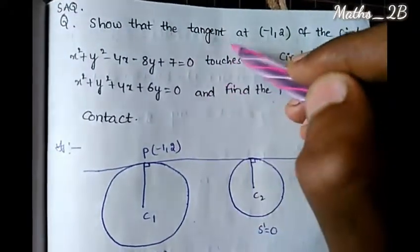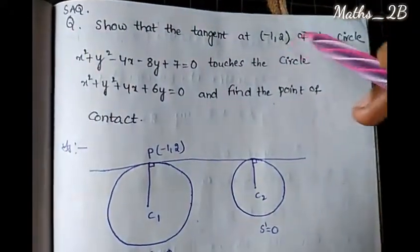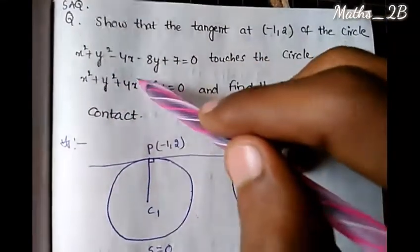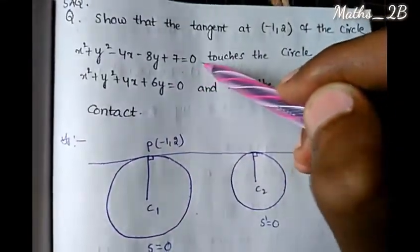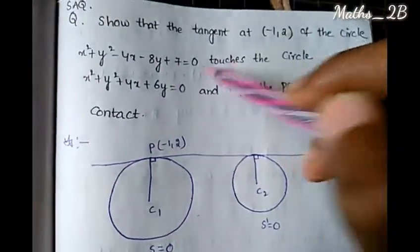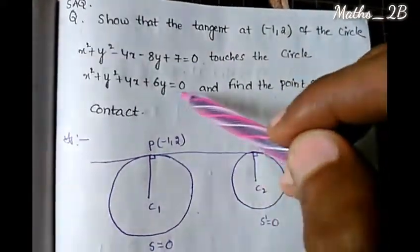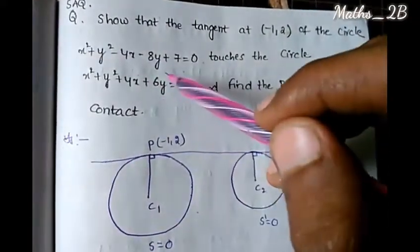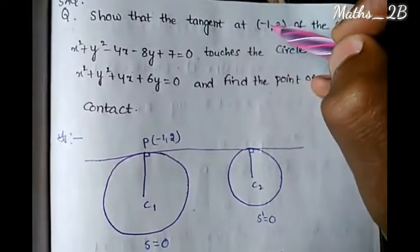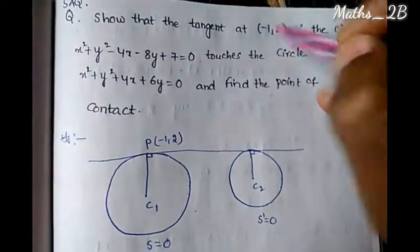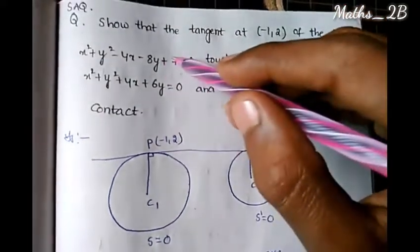The tangent to minus 1, 2 of the circle x squared plus y squared minus 4x minus 8y plus 7 equals 0 touches the circle x squared plus y squared plus 4x plus 6y equals 0. So here we are going to write minus 1, 2, and here we are going to write tangent. This is the circle.